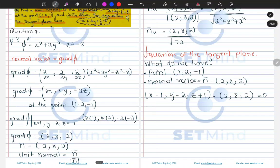So if we dot, you will see that we will have 2x minus 2 plus 8y minus 16 plus 2z plus 2.